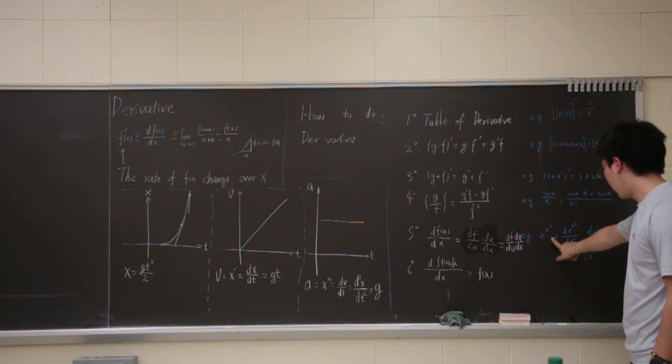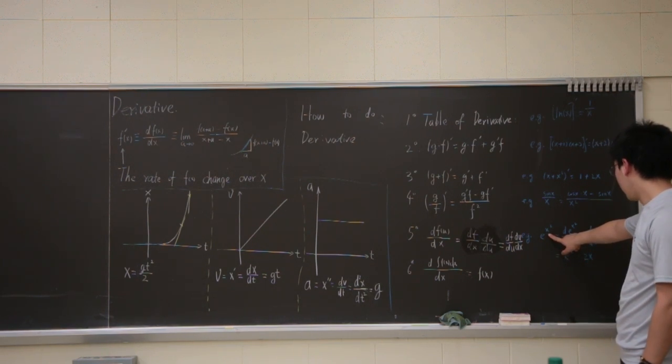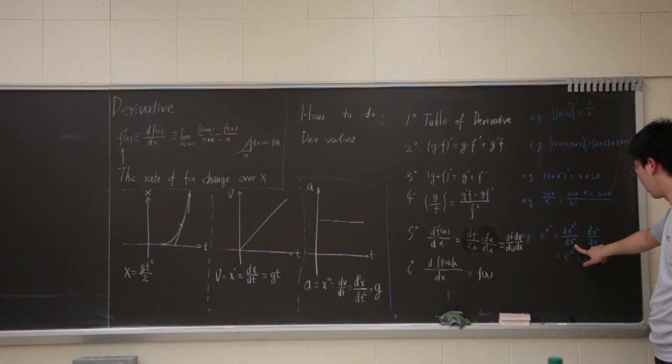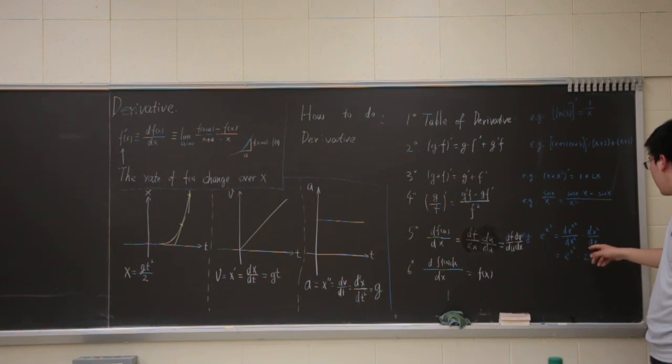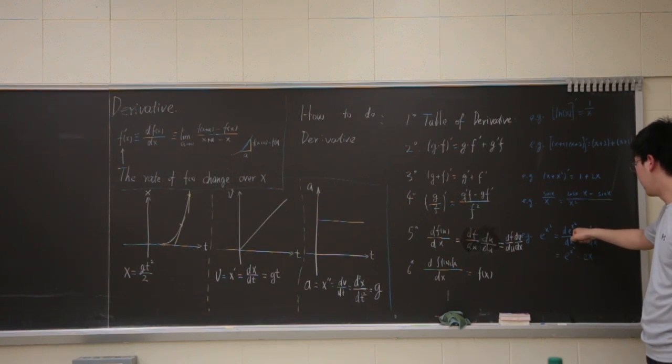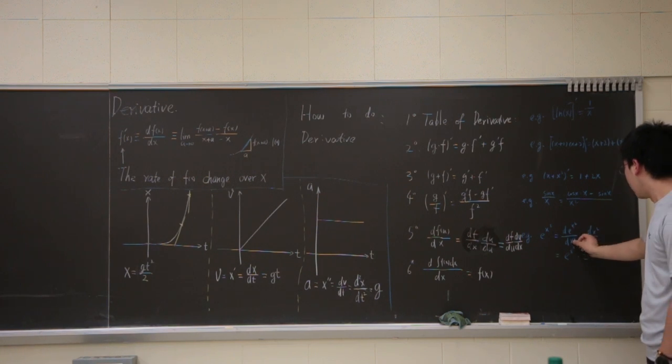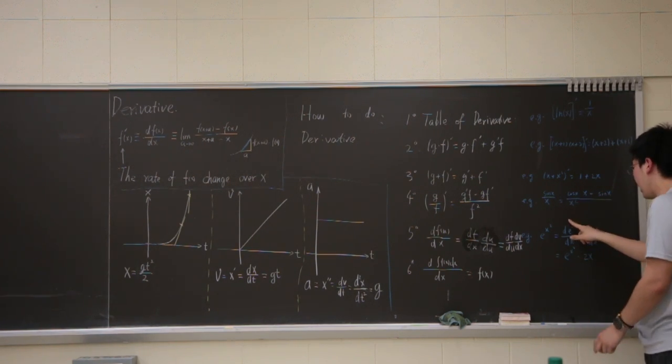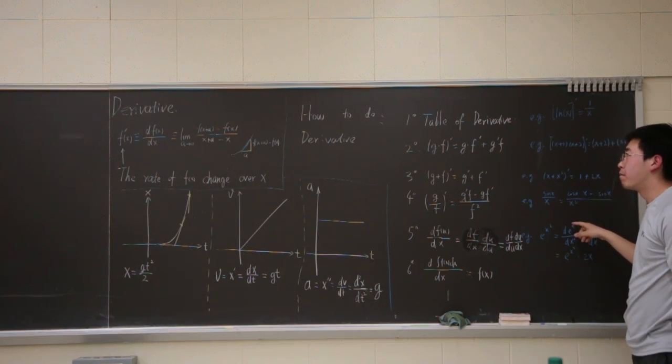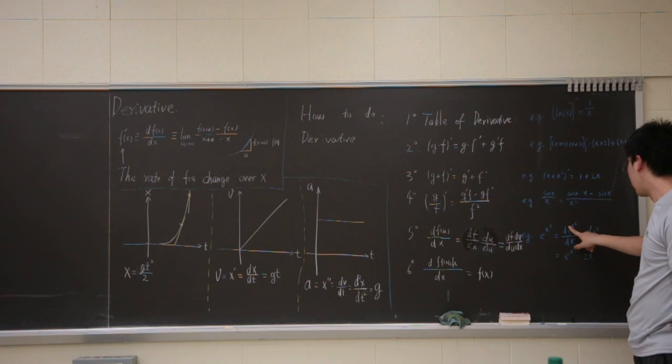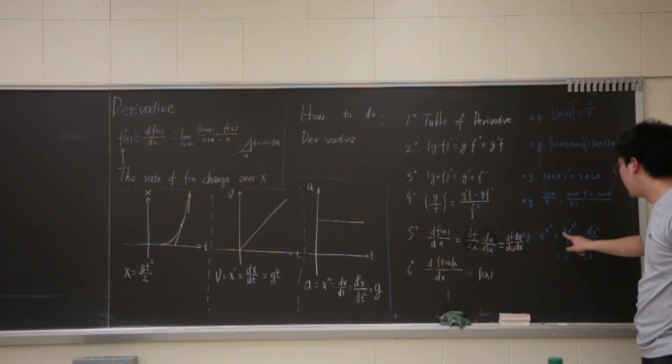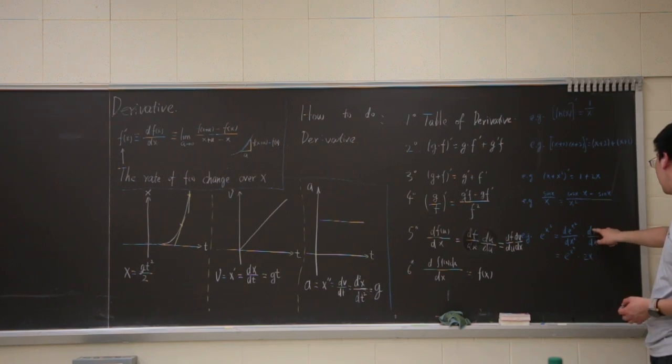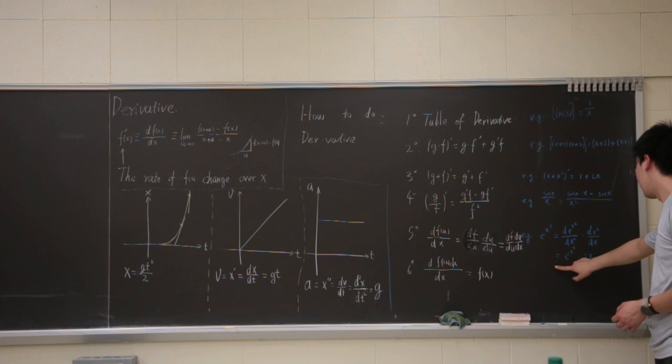So, the example is exponential of x square. So, as you can see, u is x square, and x is x. So, you do the d e to the x square over d x square, and d x square over dx. So, u is this, x is this, f is this, and you can, just don't be scared by the look of it. Just think x square is just a blob, a u, a single variable. The derivative of e to the u is e to the u. So, you will have e to the x square. And d x square over dx is 2x. So, that's the final answer you will have.